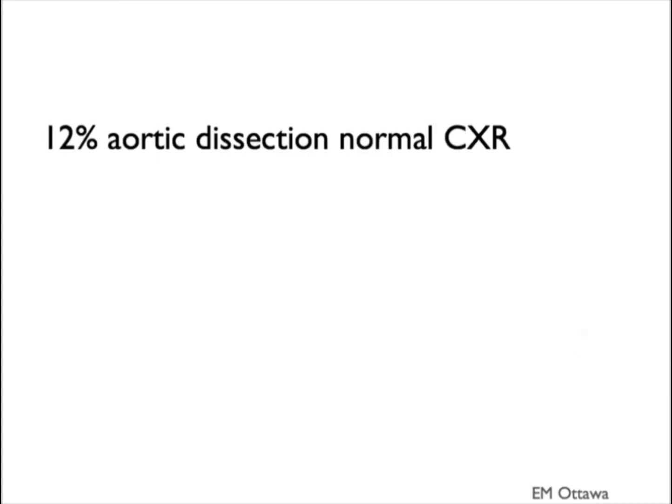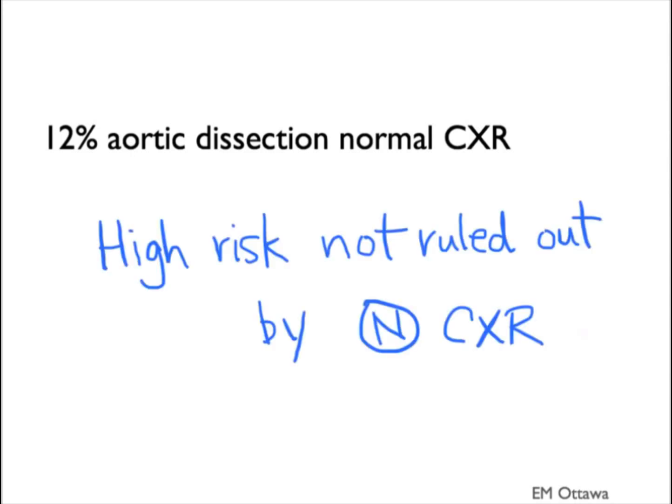Remember, aortic dissection may not always have typical symptoms. 12% of patients with aortic dissection have a completely normal chest x-ray. Therefore, a high-risk patient is not going to be ruled out by a normal chest x-ray.